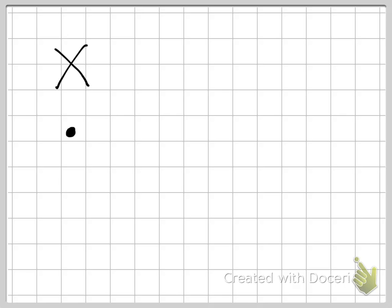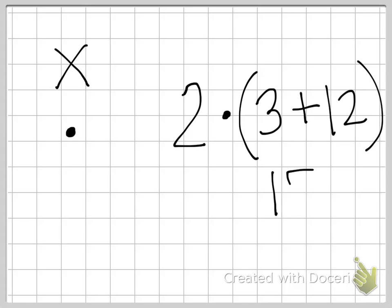So if you did this problem right here, 2 times (3 + 12). You would do your parentheses first, which is 15. And then you would multiply it by 2. 2 times 15 is 30.